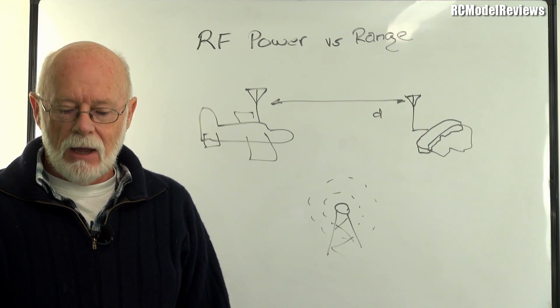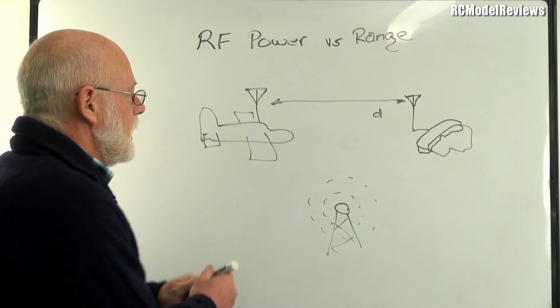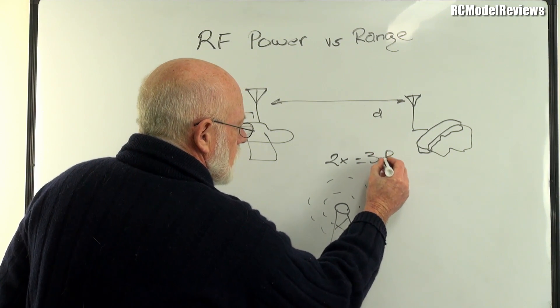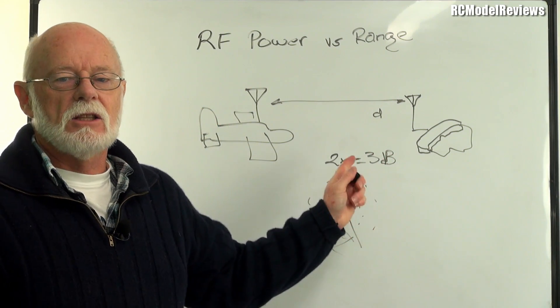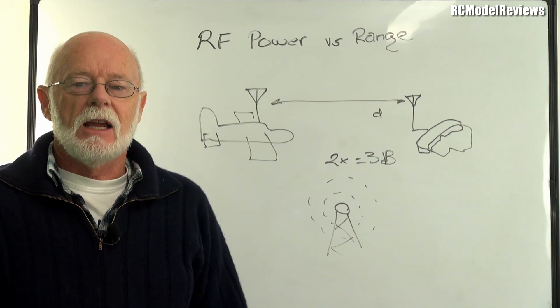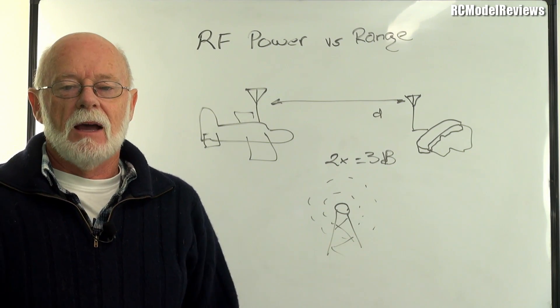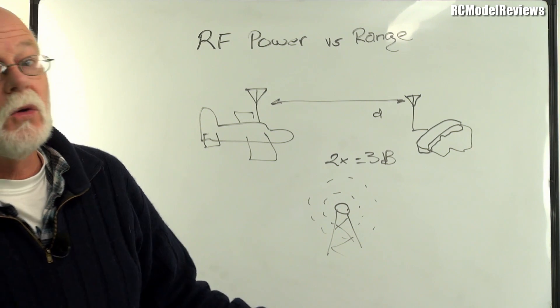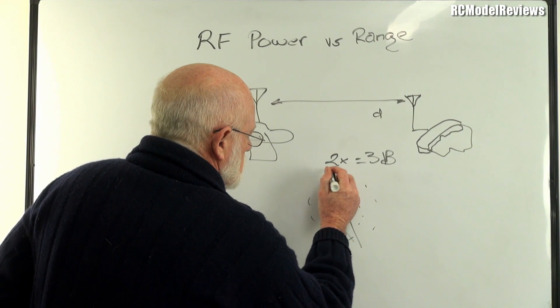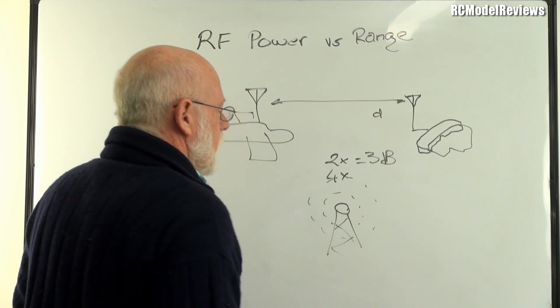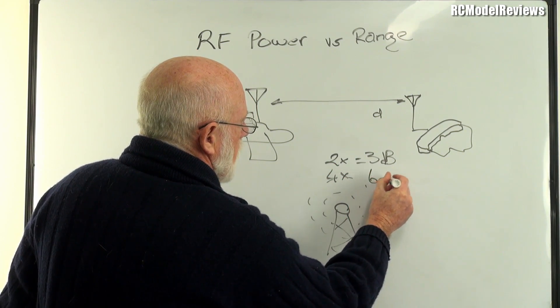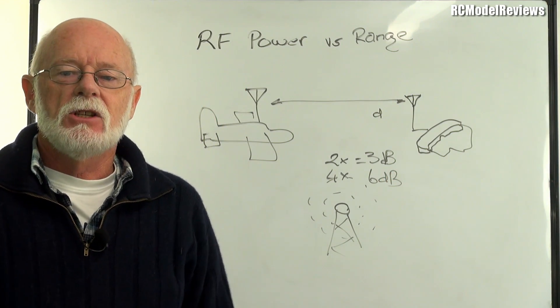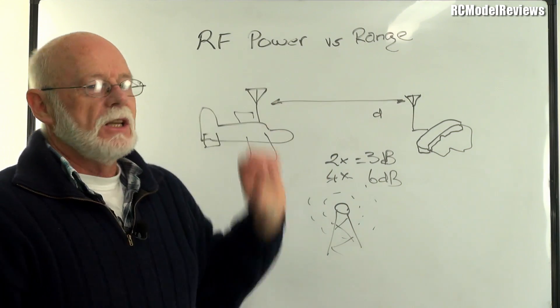So how can we get around this? Now, every time we double our power, two times the power equals three decibels. It's a logarithmic measure. So twice the power is 3 dB extra. So every time you add 3 dB, you are increasing the power by a factor of two. So if we want to go to four times the power, that would be 6 decibels. And why am I using decibels? Because antenna gain is measured in decibels.